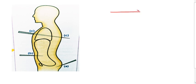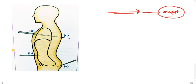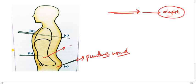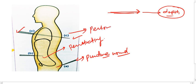Stab wounds are caused by force applied along the long axis of a weapon, so the depth is the maximum dimension. If the weapon reaches only up to the skin level, this is known as a puncture wound. If the tip of the weapon reaches up to a cavity, this is known as a penetrating stab wound. And if the weapon is traversing through and through, this is known as a perforating stab wound.